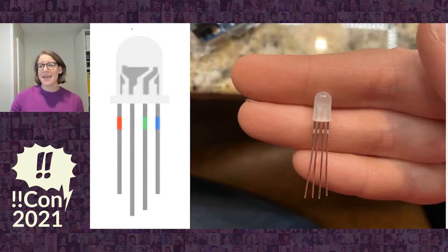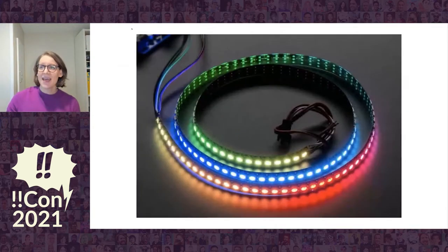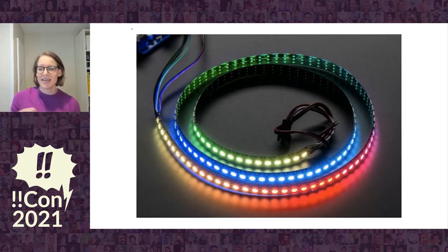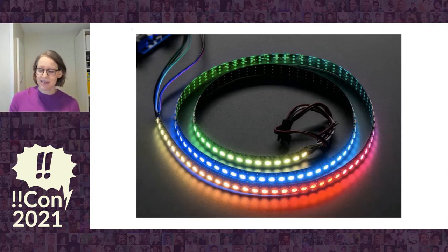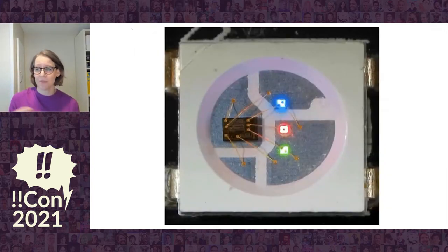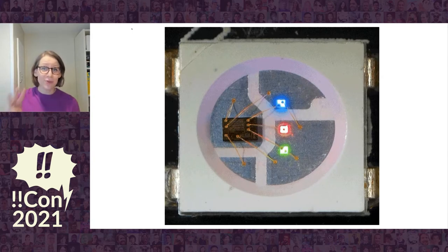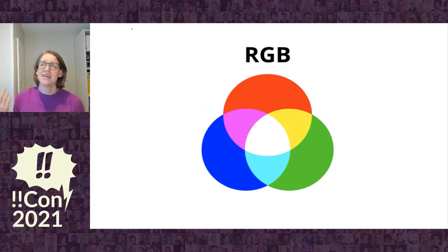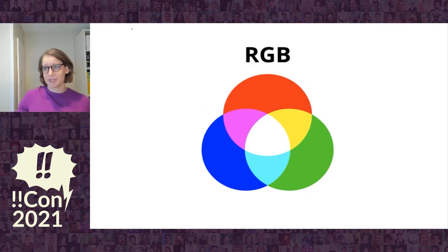This is a RGB LED, and you may have seen them like this as well. They're very common today in strips. And if you get the right kind, you can control each of the LEDs individually, setting brightness or color. But all of these, whether the former or the latter, actually have three lights inside every LED — a red, green, and blue. Turns out this is all you need to make millions of colors.